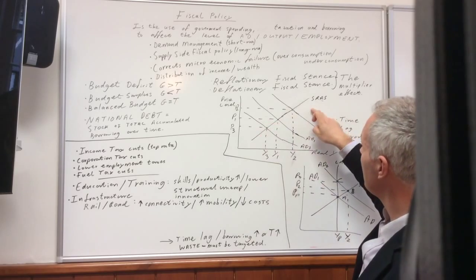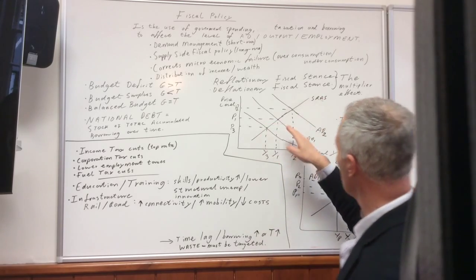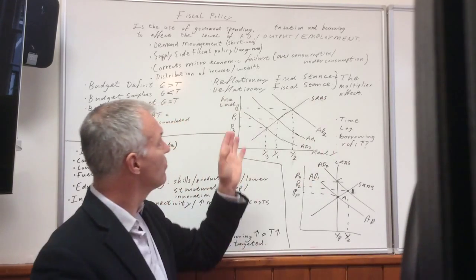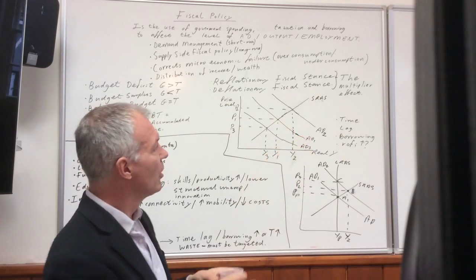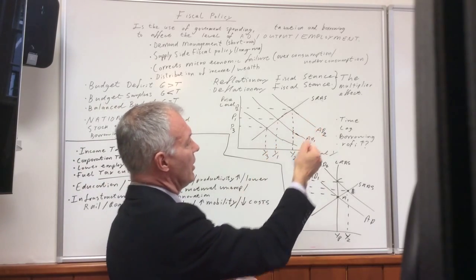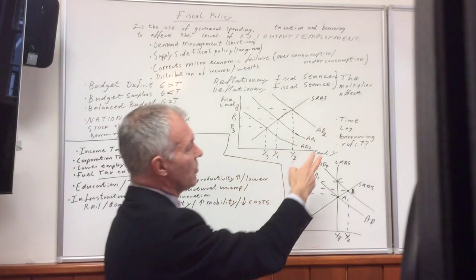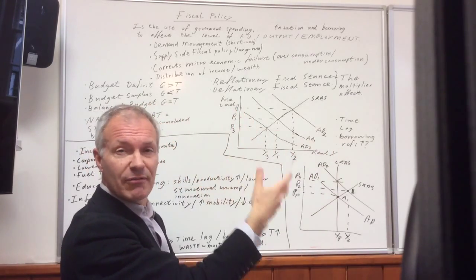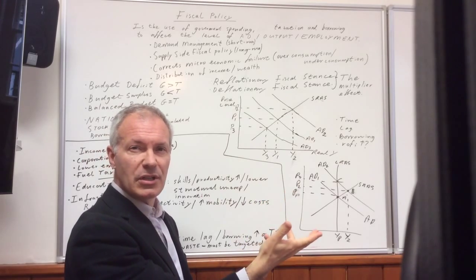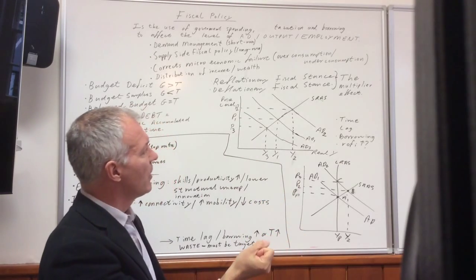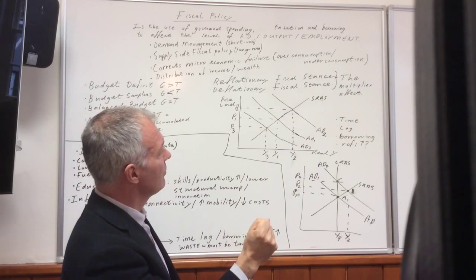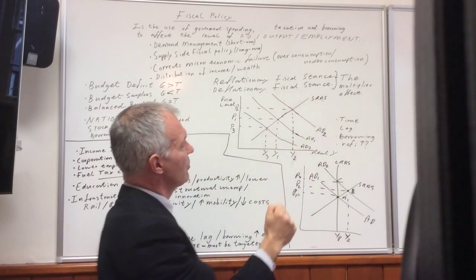But we could draw it on a simple AD-AS diagram. Here we have, we start at AD1. If we have a reflationary fiscal stance, we will shift to AD2. Now, notice what will happen. Output will increase, but it's important to comment that the price level, the level of inflation, may well increase too, depending on the output gap situation.